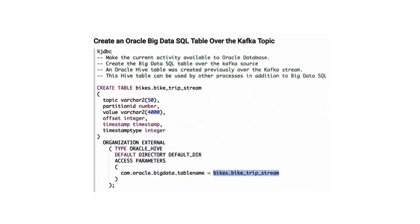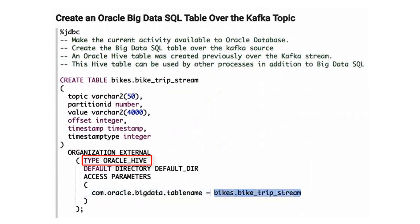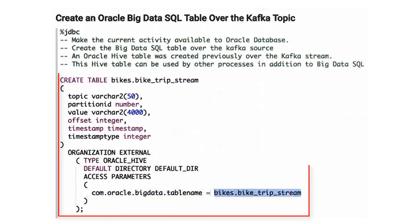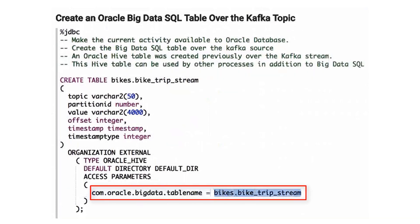Now that we have a Hive metadata table over the Kafka stream, we simply create a Big Data SQL table — an external table — over the Hive table. This statement uses the same Oracle Hive driver shown in the second video in this series. This is the external table that makes the Kafka stream activity available to Oracle database, enabling Big Data SQL to query the Kafka stream directly.